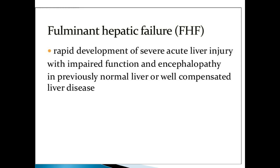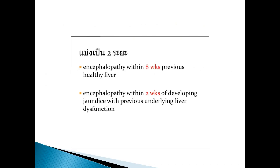When the patient becomes drowsy, the most important target organ of this disease is the brain — brain functions are deteriorated and depressed. This is the hallmark of this disease. Encephalopathy within eight weeks of this disease with a previously healthy liver is the sub-acute type. Encephalopathy occurring two weeks after developing jaundice with previously underlying liver dysfunction is the acute fulminant type of hepatitis.